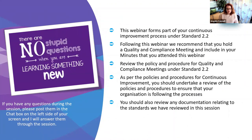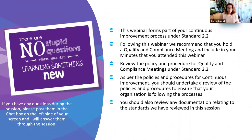This webinar forms part of your continuous improvement process under standard 2.2. Following this webinar we highly recommend that you hold a monthly meeting and at that meeting you should record anything that needed to be updated — whether you needed to update your policies and procedures to align with your practices, or align your practices with the policies and procedures. Record this as part of your continuous improvement within your QC meeting minutes.